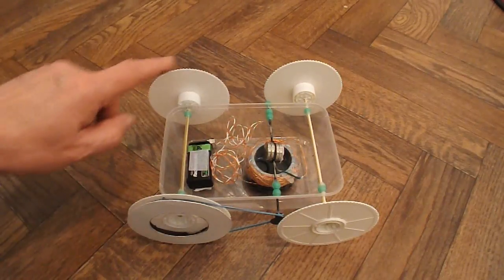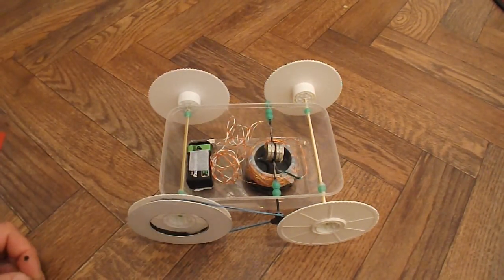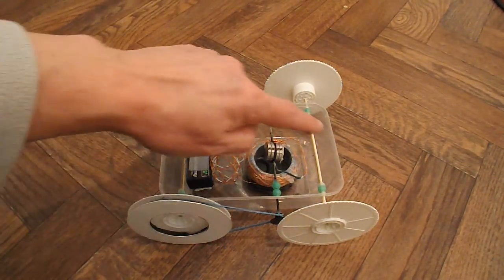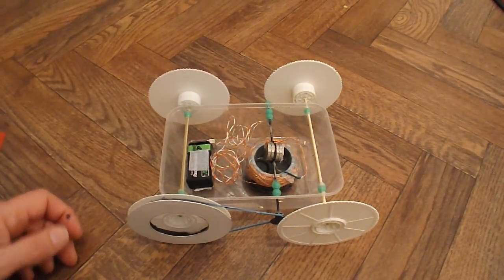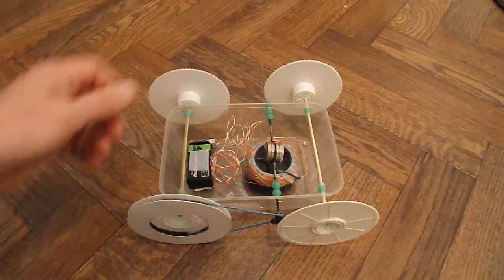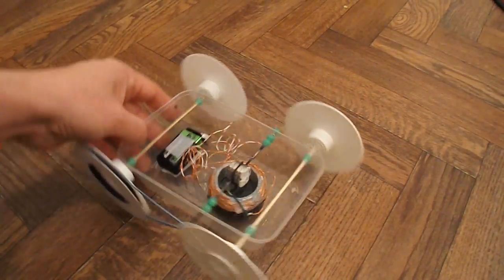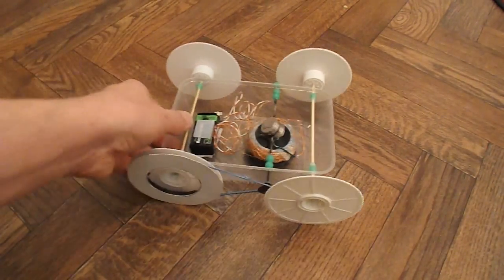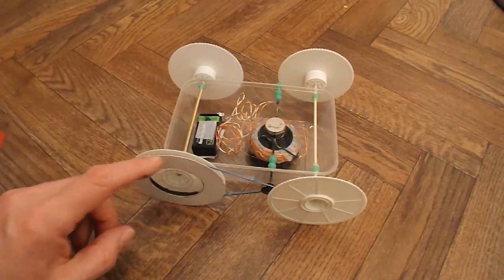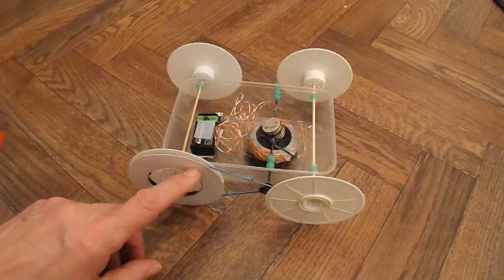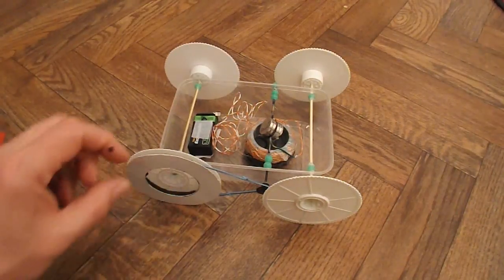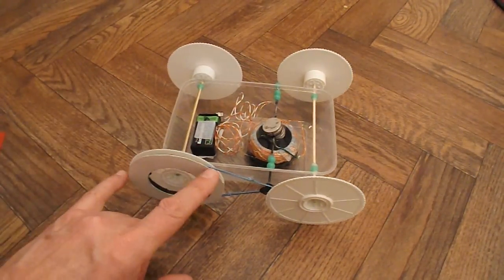The wheels are made from VHS videocassette spools. The axles are barbecue skewers. Got lots of little green beads to space things about. This wheel has got a bit of polystyrene pizza base in a circle and a bit of cardboard on the outside of it to make a nice big pulley.